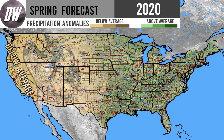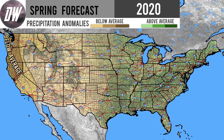Let's get right into things. We're starting with our precipitation forecast, beginning with below average precipitation. For the west coast, we're looking at slightly below average precipitation for the northern Rockies through Washington State, down through Oregon, down through California, and portions of Nevada as well. On paper this will be below average, but it might not be too noticeable for a lot of these regions.